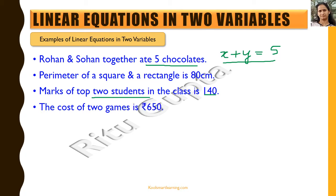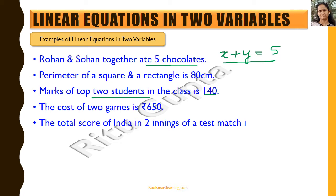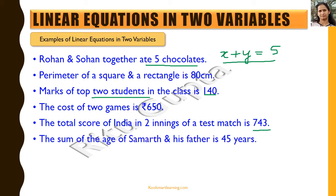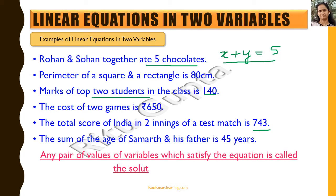More examples: the cost of two games is 650 rupees; the total score of India in two innings of a test match is 743; the sum of the ages of Samarth and his father is 45 years. For all these cases we can write linear equations in two variables — for instance, x plus y equals eighty, where x is the perimeter of the square and y is the perimeter of the rectangle.